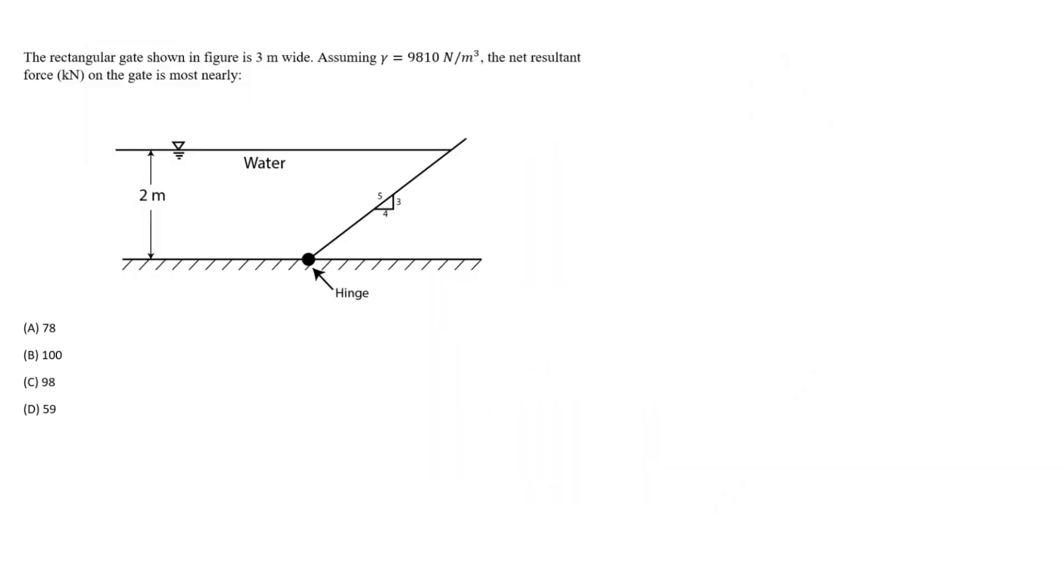Okay, back again with an FE type question. We're told here that the rectangular gate shown in the figure is 3 meters wide. Assuming gamma is 9810, the net resultant force in kilonewtons on the gate is most nearly what?